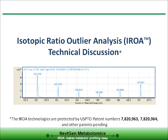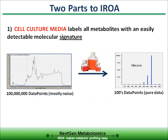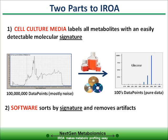The AROA technologies are protected by patents licensed to Next-Gen Metabolomics. There are two components to the AROA methods. The first involves using a specifically designed media to label the complete biochemical content of a living organism with an easily detectable molecular signature. The second component is the software algorithms called ClusterFinder that can easily find and verify these signatures, and even more importantly, remove all artifactual peaks, which currently confuse and lead to inaccurate data interpretation.